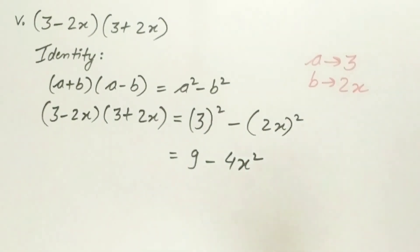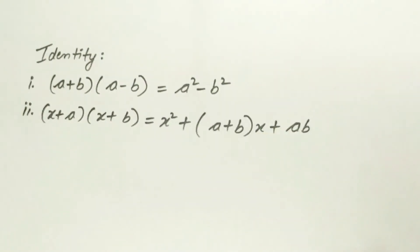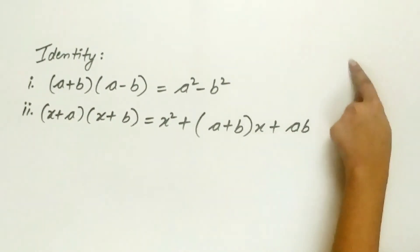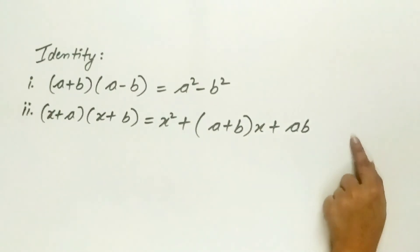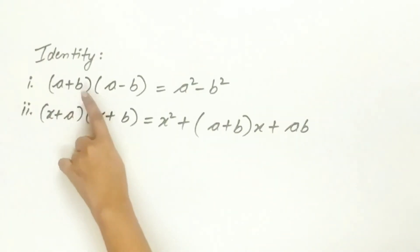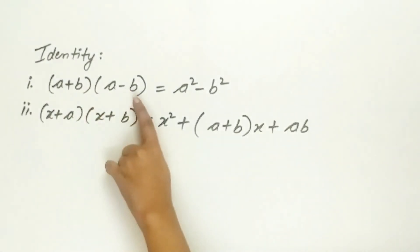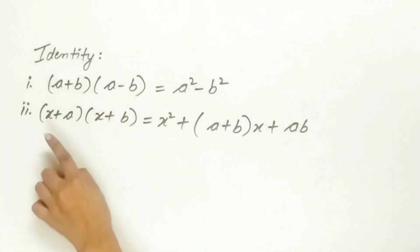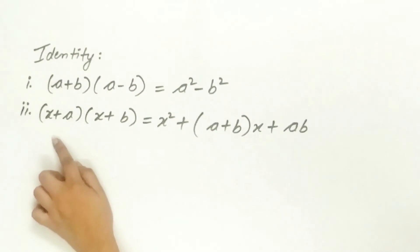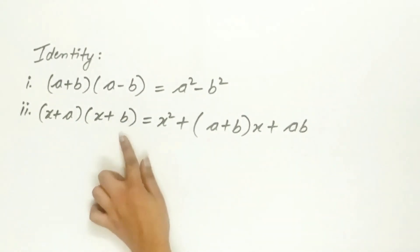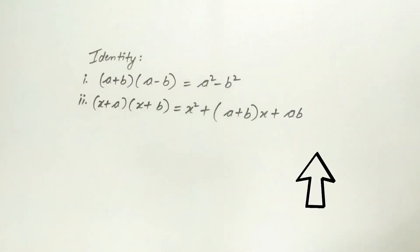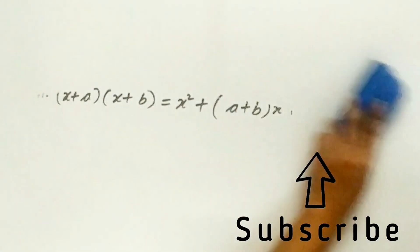This brings us to an end. In question 1, we have used two identities: (a + b)(a − b) and (x + a)(x + b). Do not forget to hit the subscribe button.